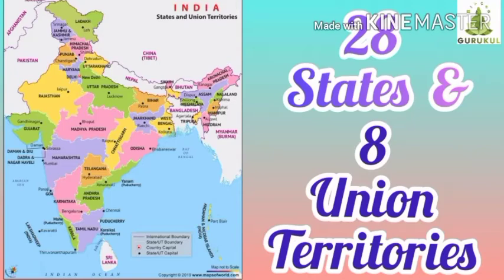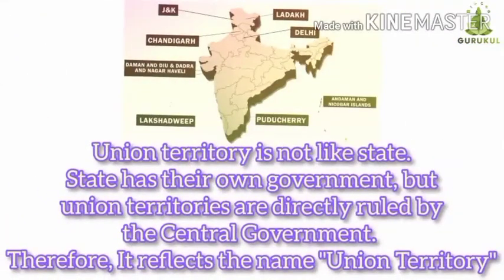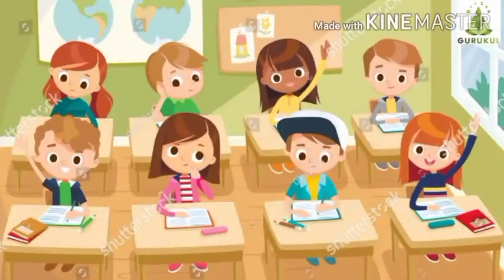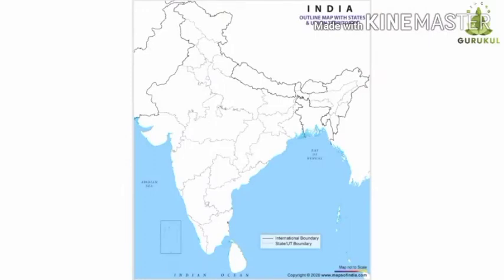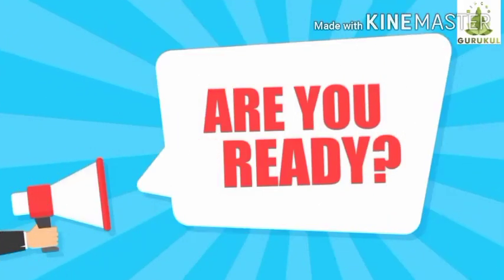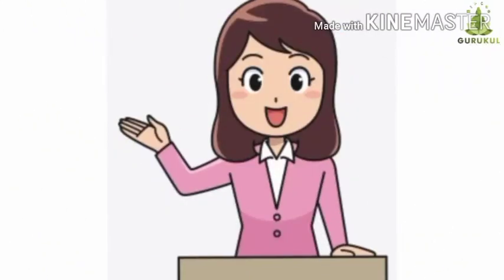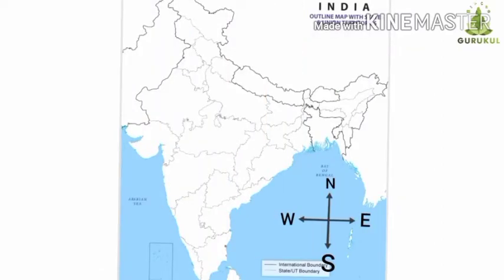India has 28 states and 8 union territories. Every state has its own capital and some specialty. Union territory is not like a state — states have their own government, but union territories are directly ruled by the central government, therefore reflecting the name 'union territory.' Now we will see the states and union territories in the map of India. Let us start filling the states from the north side.